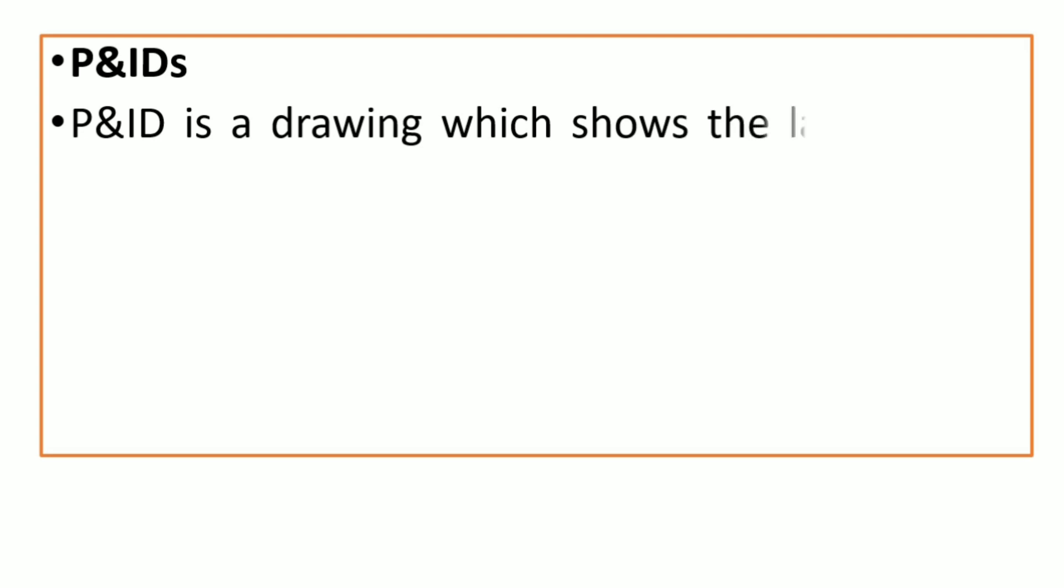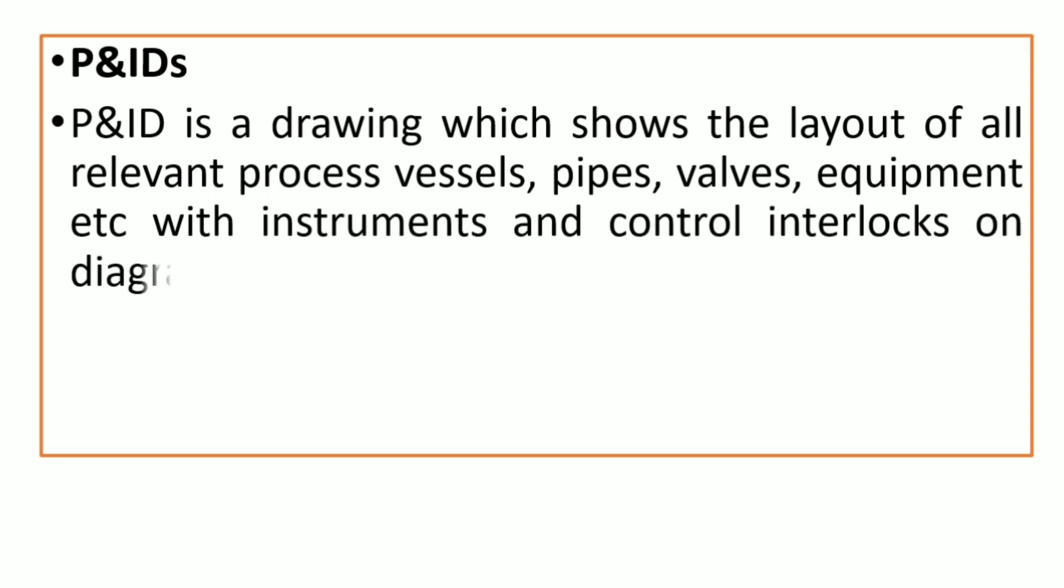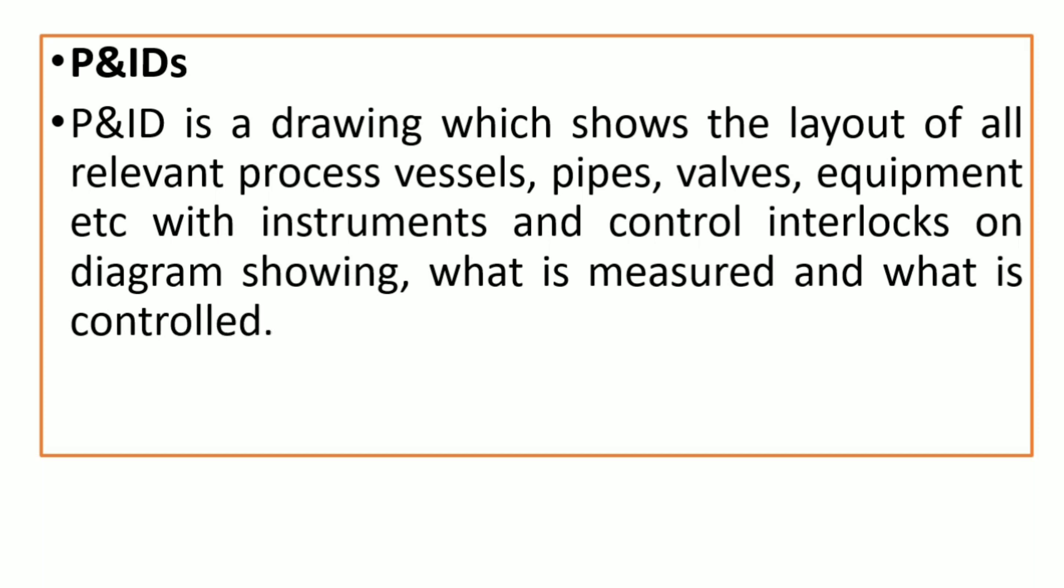P&ID is a drawing which shows the layout of all relevant process vessels, pipes, valves, equipment, etc., with instruments and control interlocks on a diagram showing what is measured and what is controlled.